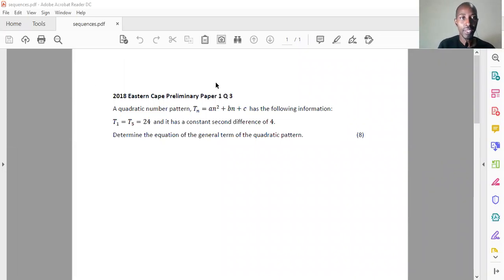It says to us here, a quadratic number pattern, Tn equals An squared plus Bn plus C, has the following information: T1, the first term, and T5, the fifth term, are equal to 24, and it has a constant second difference of 4. Determine the equation of the general term of this particular quadratic pattern. That's eight marks.